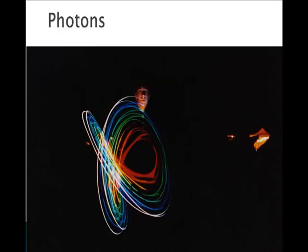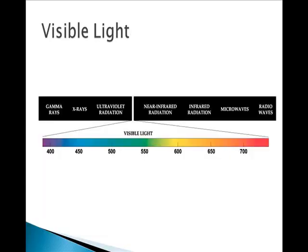Light energy is packaged as photons, which vary in energy as a function of their wavelength. Photoautotrophs only use the range of 380 to 750 nanometers of wavelengths for photosynthesis.